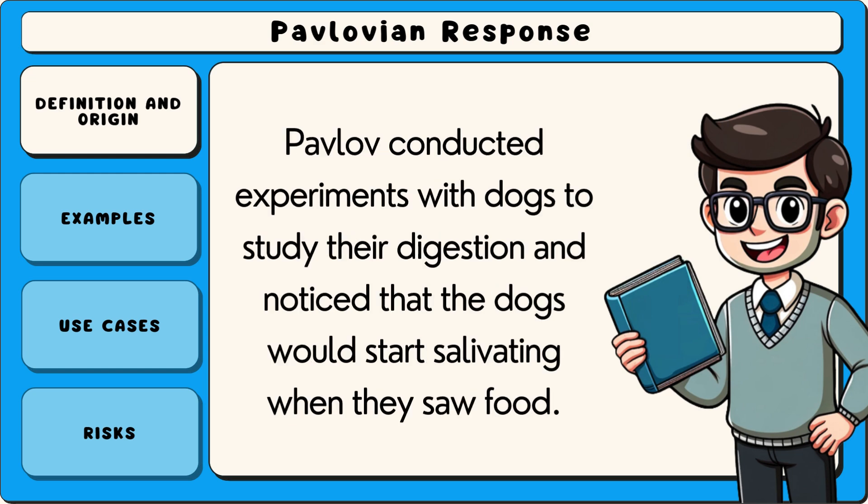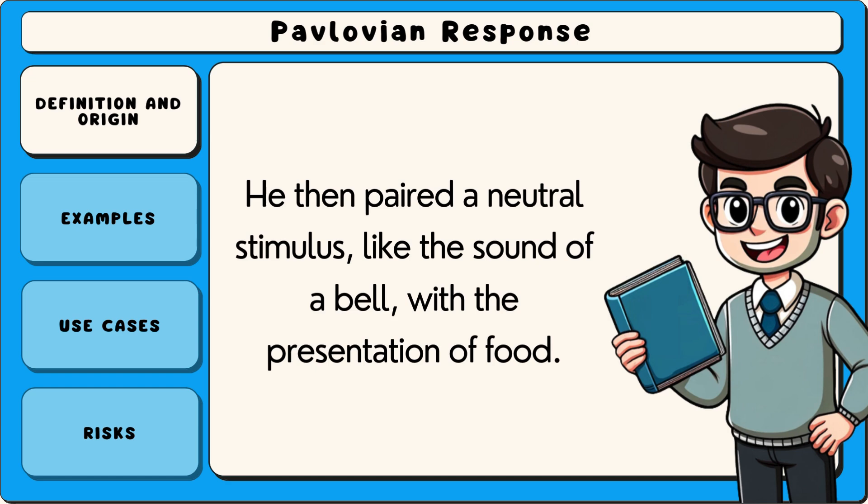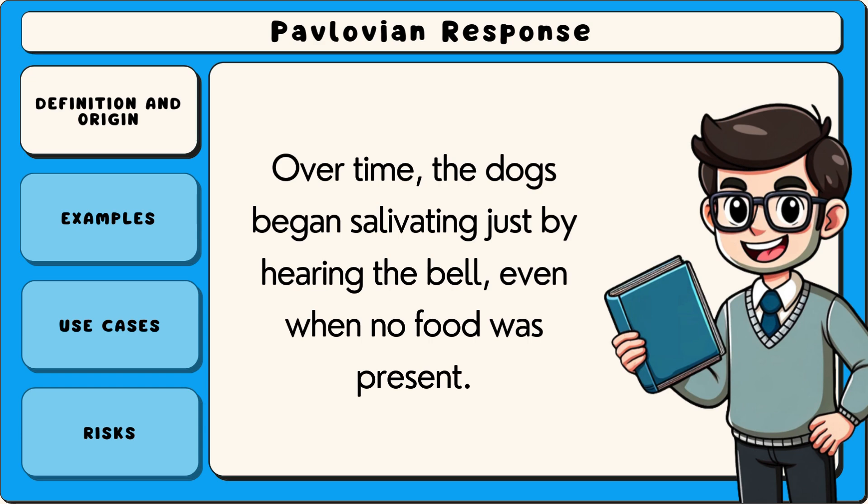Pavlov conducted experiments with dogs to study their digestion and noticed that the dogs would start salivating when they saw food. He then paired a neutral stimulus, like the sound of a bell, with the presentation of food. Over time, the dogs began salivating just by hearing the bell, even when no food was present.